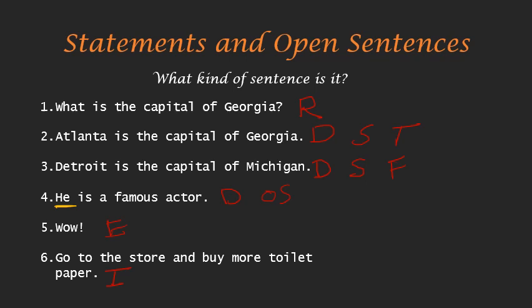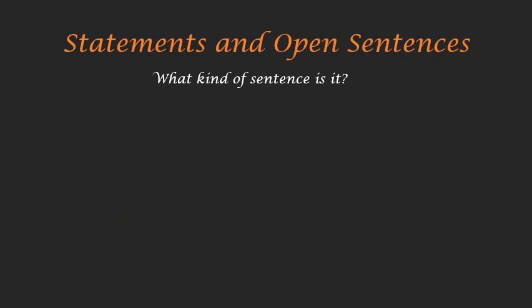In this class, we're going to encounter a lot of mathematical sentences and statements, where notation is used that really just stands for words. Even an equation is a kind of sentence. For example, (1+5)² = 36 — read it out loud: "one plus five, quantity squared, is equal to 36." This notation stands for words that make up a sentence, so it should be considered a sentence in its own right.